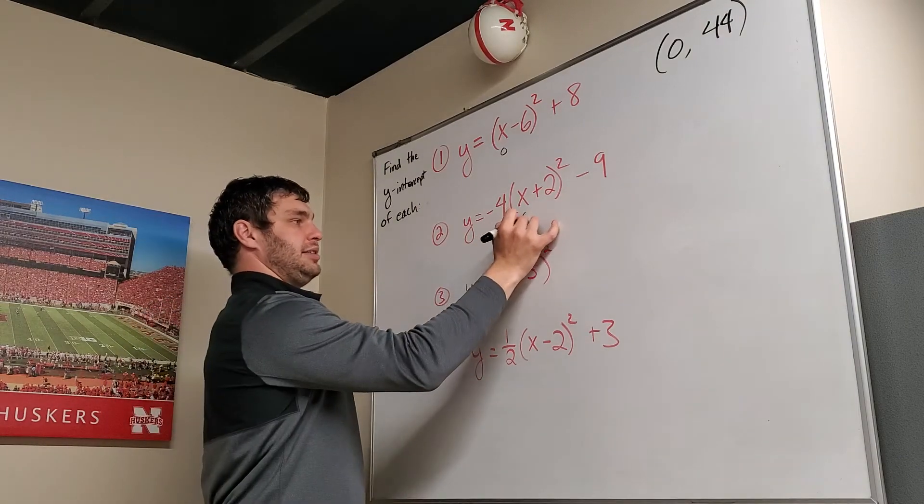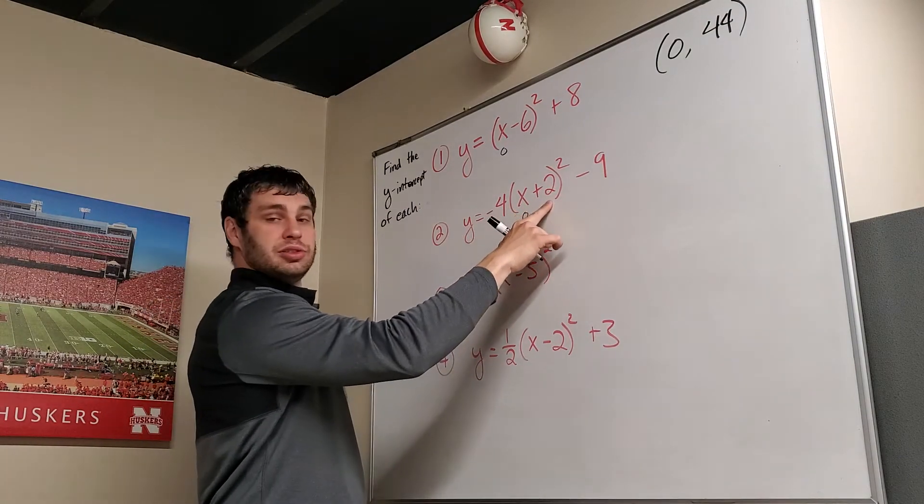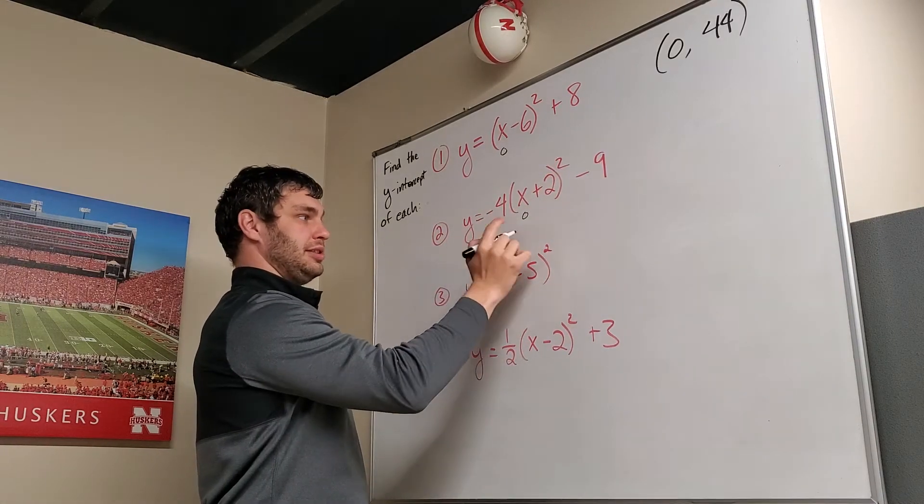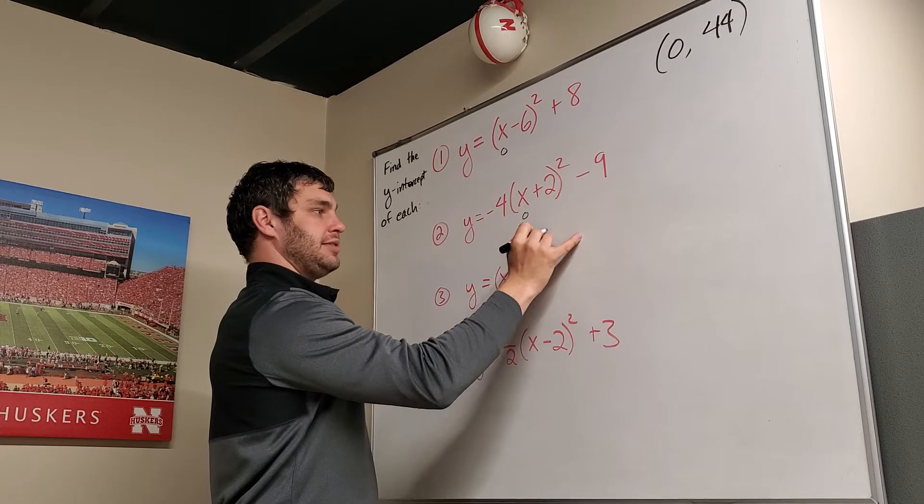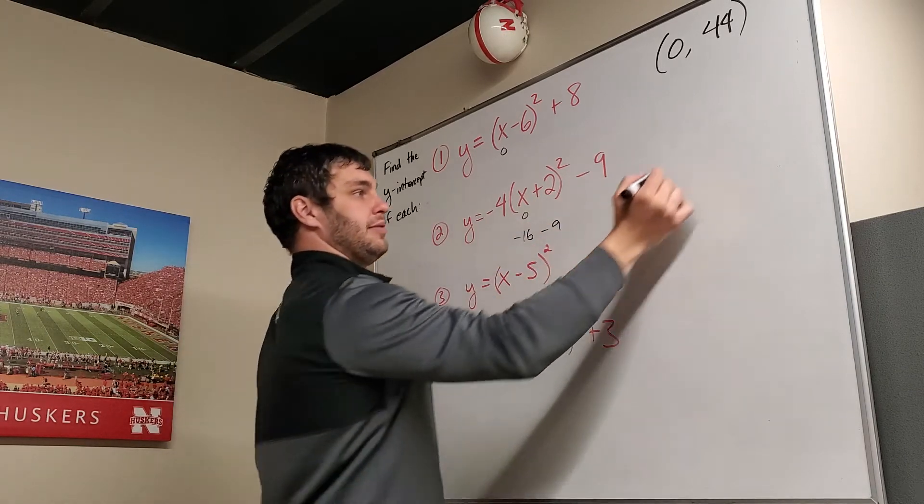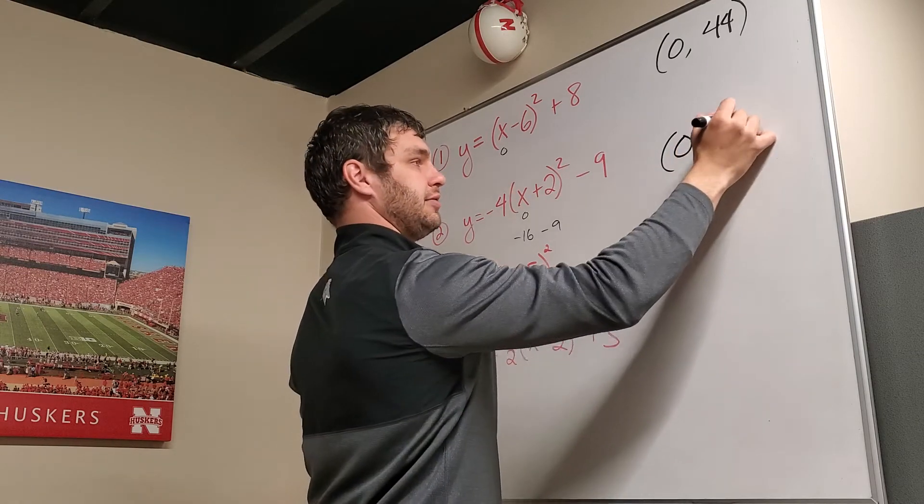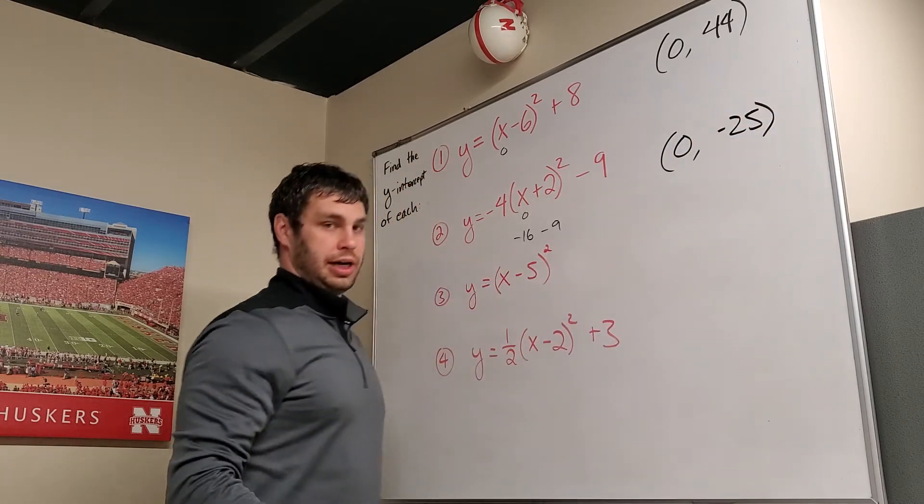If I plug in 0 for x on this one, 0 plus 2 is 2. 2 squared is 4. 4 times negative 4 is negative 16. And negative 16 minus 9 is negative 25. So again, 0 for the x value, negative 25 for the y.